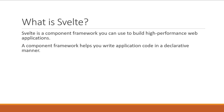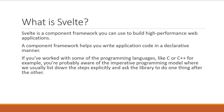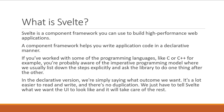But what do we mean by declarative? If you've worked with some programming languages like C or C++ for example, you are probably aware of the imperative programming model where we usually list down the steps explicitly and ask the library to do one thing after the other. In the declarative version though, we are simply saying what outcome we want. We just have to tell Svelte what we want the UI to look like and it will take care of the rest. It's a lot easier to read and write and there's no code duplication.